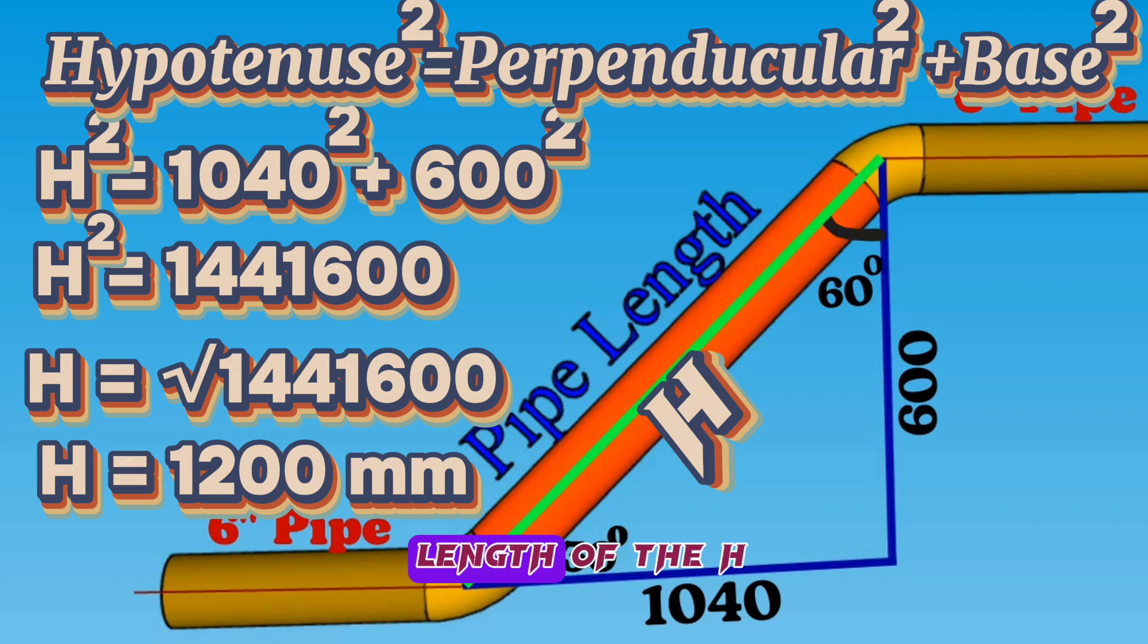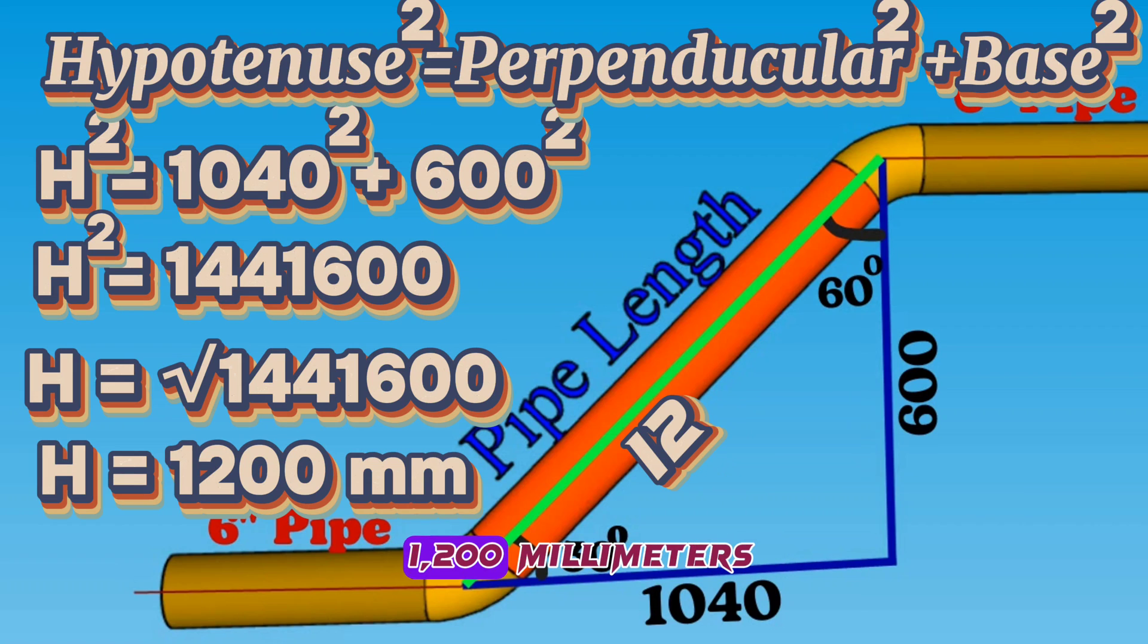As we know, the length of the H hypotenuse is also the distance between the centers of the butt-weld elbows. So, the overall length between the centers of the butt-weld elbows is 1200 millimeters.